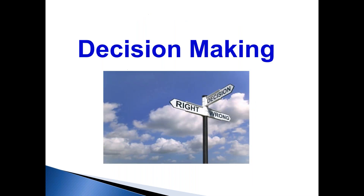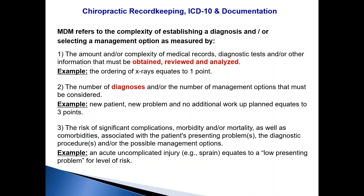This is called decision making. When a patient comes in, you're going to take a history, do an exam, look at x-rays, maybe ask for diagnostic tests from other doctors. This is the formal definition of decision making, right out of the AMA CPT code book: decision making refers to the complexity of establishing a diagnosis and/or selecting a management option as measured by three things — the amount of records and tests you have to obtain, review, and analyze; the number of diagnosis and procedure codes; and the risk of complications.